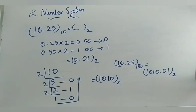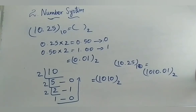As a whole, 10.25 to the base 10 equals 1010.01 to the base 2. This is how you convert a fractional decimal number to binary. The remaining topics will be discussed in the next class. Thank you, students.